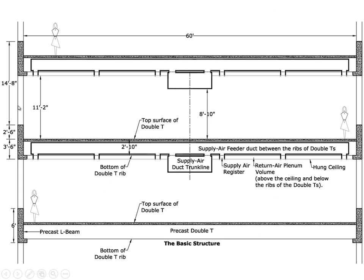Here's what something like that might look like. We have perimeter columns on the north and south portions of the building with very tall glass. The basic structure includes a concrete L beam with a ledger on the bottom — in this case about 6 feet deep — and a double T spanning between them. The top surface and the bottom of the rib are shown. It's an unbelievably simple system: simple columns, L beams on each side, and double Ts spanning the 60 feet in between. The overall depth of these double Ts including the topping layer is 34 inches.